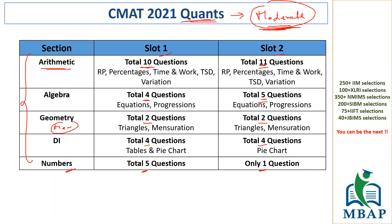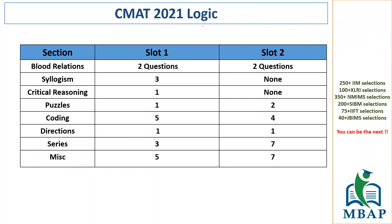Overall, not much of a surprise in the distribution of questions, but in terms of difficulty levels it was slightly higher than last year. People with less quant preparation felt the heat of this section. Ideally, people who are very good at quant would have easily gotten 22 to 23 questions right, while other students would have gotten somewhere around 18 to 19 questions right.